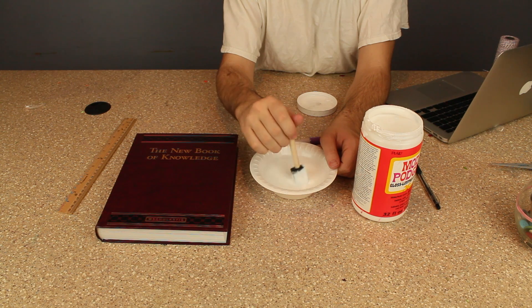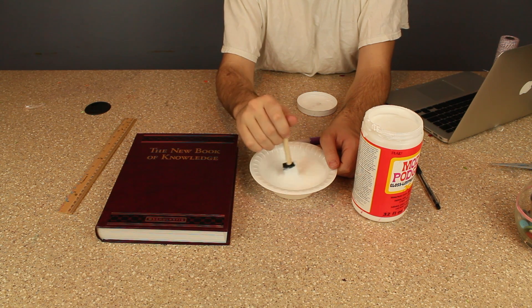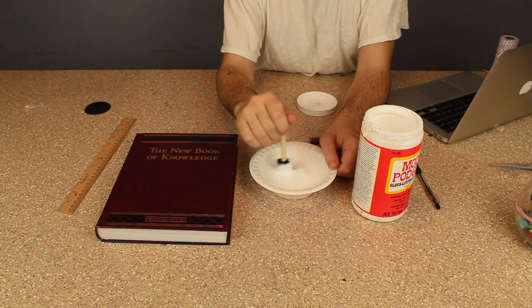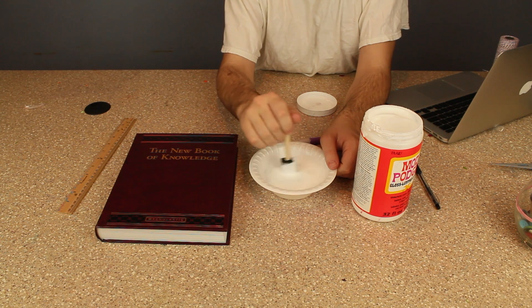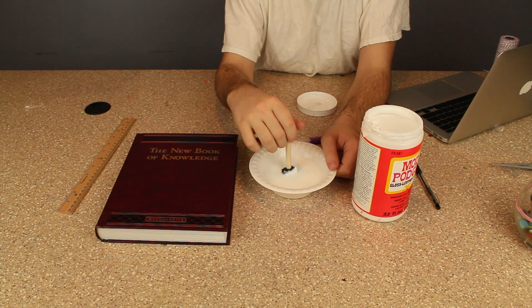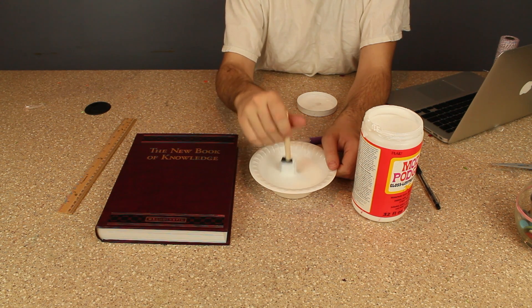What we're going to be doing is sealing the book so we can have a compartment in it, and we're using Mod Podge and water. The water thins the Mod Podge so it can seep through the pages and keep a nice bond.